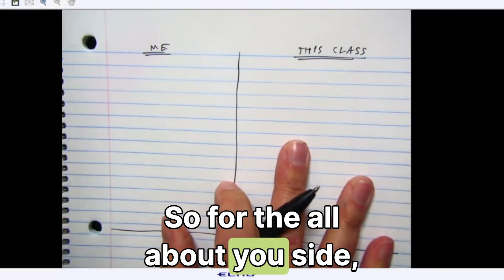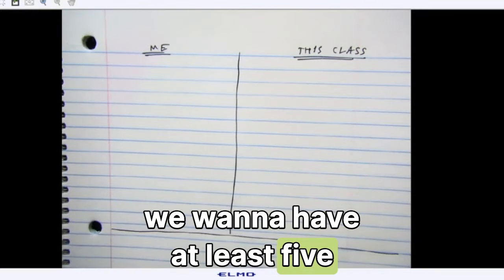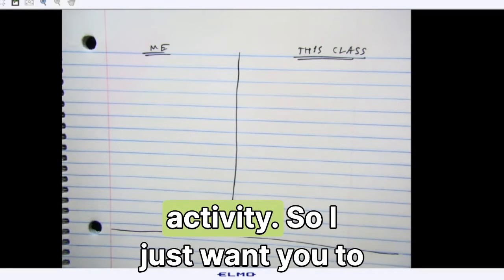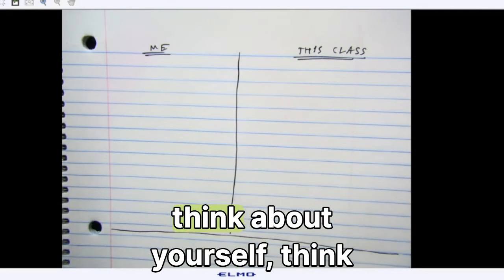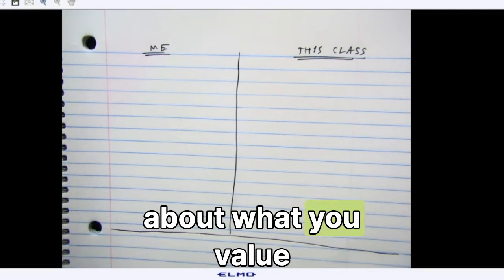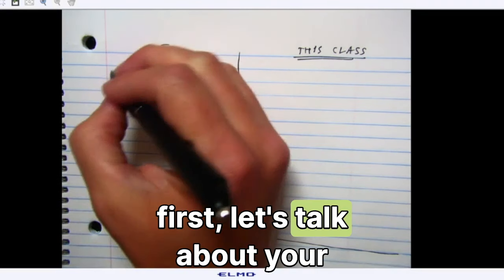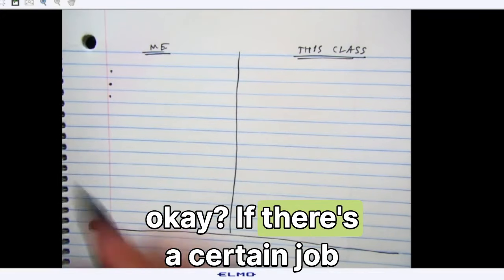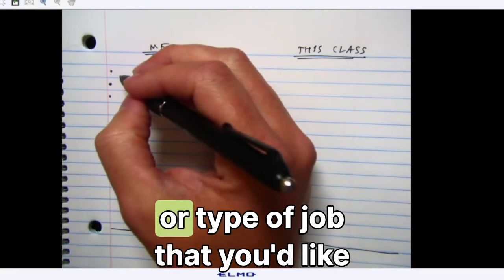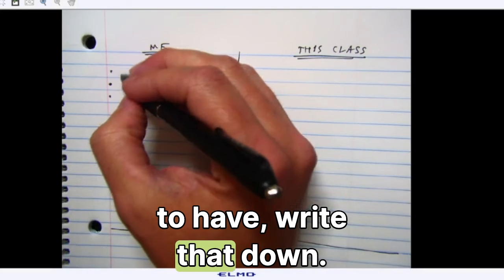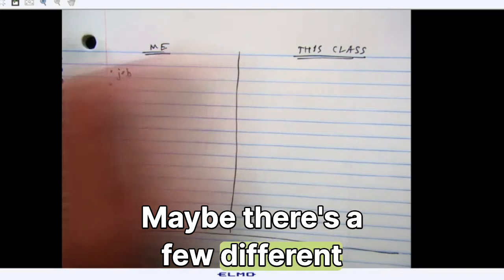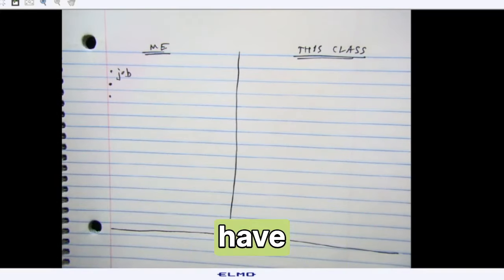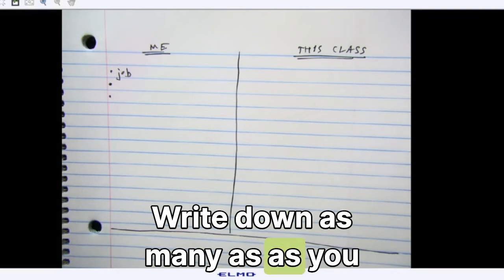So for the all about you side, we want to have at least five bullet points for this first activity. So I just want you to be open-minded, think about yourself, think about what you value. First, let's talk about your goals. If there's a certain job or type of job that you'd like to have, write that down. Maybe there's a few different types of jobs you'd like to have. Write down as many as you have.